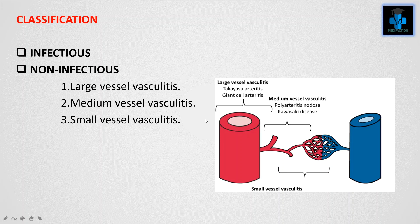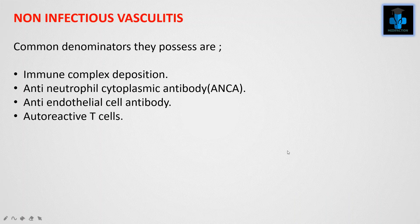On the basis of non-infectious vasculitis, it is classified into large vessel vasculitis, medium vessel vasculitis, and small vessel vasculitis. These non-infectious vasculitides share common denominators: immune complex deposition, antineutrophil cytoplasmic antibody (ANCA), anti-endothelial cell antibody, and autoreactive T cells.